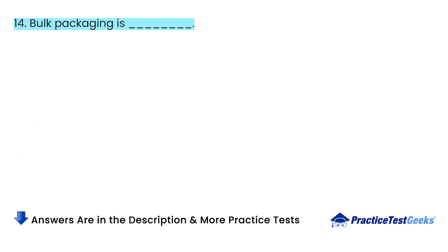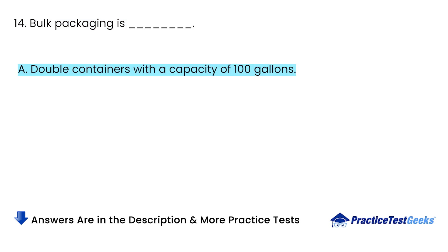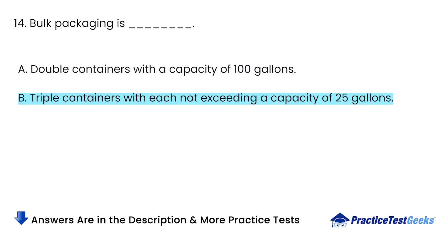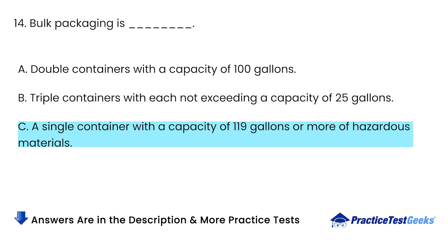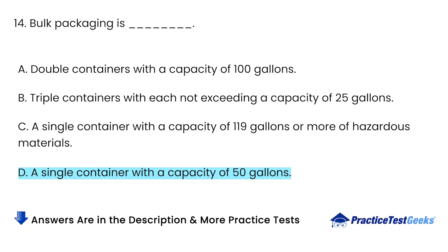Bulk packaging is: A. Double containers with a capacity of 100 gallons. B. Triple containers with each not exceeding a capacity of 25 gallons. C. A single container with a capacity of 119 gallons or more of hazardous materials. D. A single container with a capacity of 50 gallons.